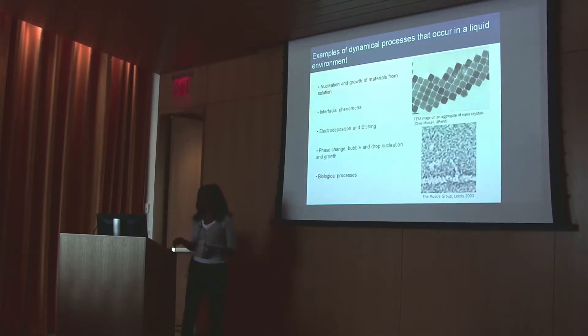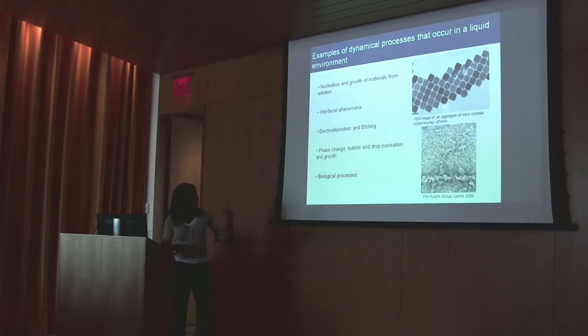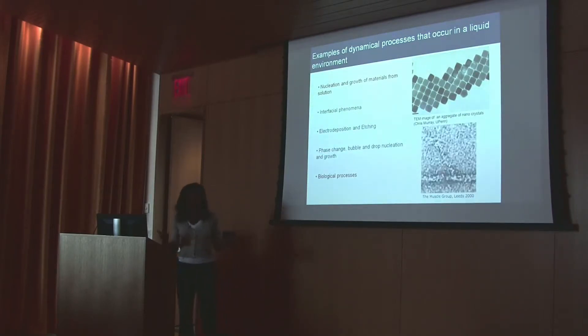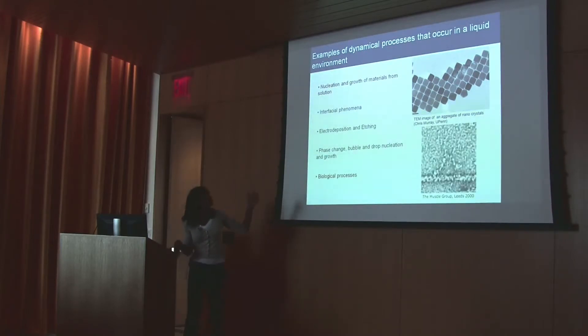These are some examples of dynamical processes that occur in a liquid. The picture at the top is nanocrystals aggregating. If we were to study the dynamics of this, we would know how they nucleate and how they grow, and then we would be able to grow them ourselves. Other processes such as interfacial phenomena, electrodeposition and etching, and bubble growth are other examples.